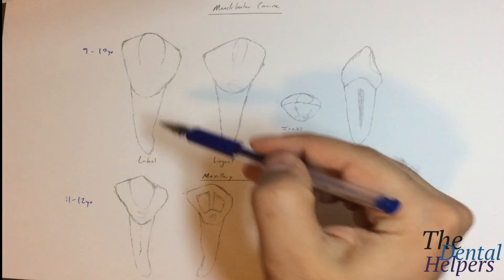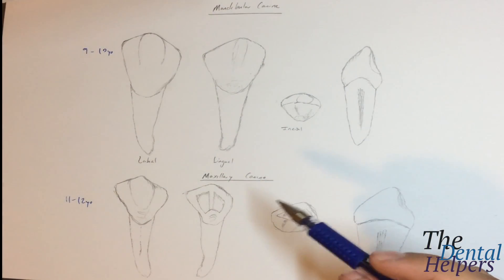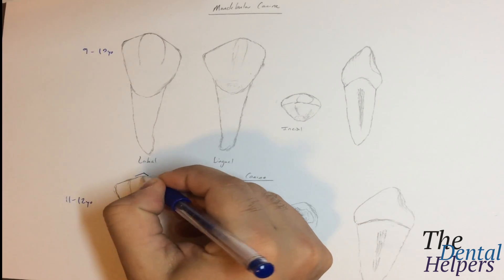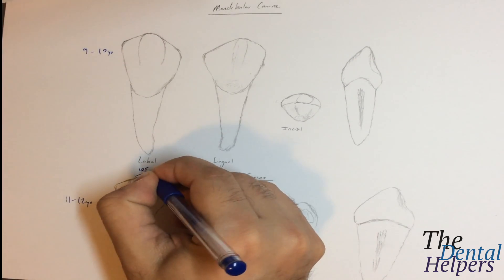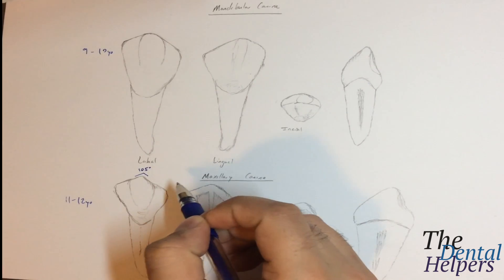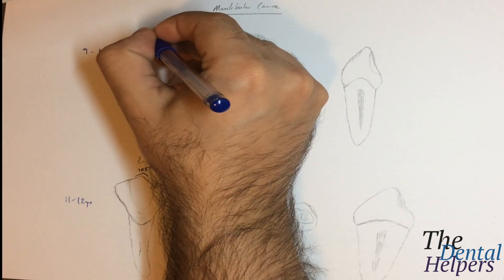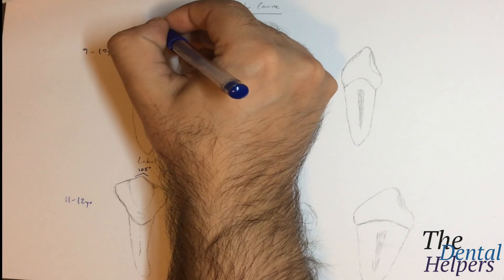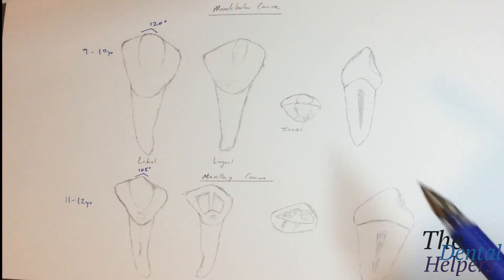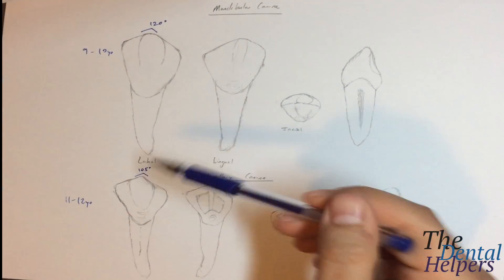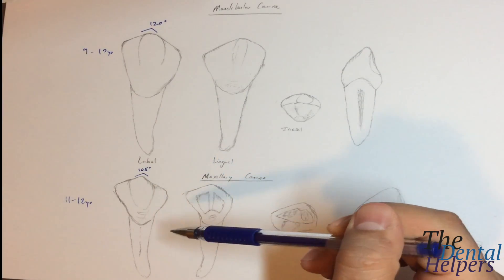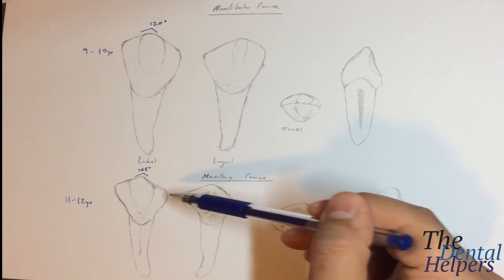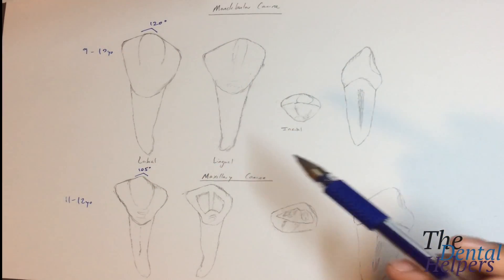From the drawing you can see a clear difference. If we look at the cusp tip, the angle is approximately 105 degrees, making it a sharp point, while the angle for the mandibular canine is 120 degrees. So already a difference we can see is that from the labial view, the maxillary canine is a sharp pointed tooth, while the mandibular is a little more blunt.